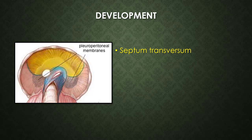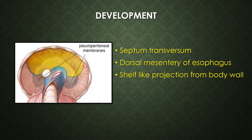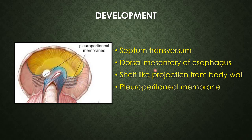The pleuro-peritoneal canal is closed by the pleuro-peritoneal membranes. The components contributing to diaphragm formation are: the septum transversum (shown in yellow), the dorsal mesentery of the esophagus near the esophageal opening, and shelf-like projections from the body wall on either side of the dorsal mesentery of the esophagus. These close the pleuro-peritoneal canal from periphery towards the center, behind the central tendon or septum transversum and on either side of the dorsal mesentery of the esophagus. Finally the closure is completed by the pleuro-peritoneal membranes.